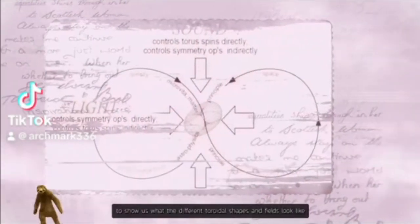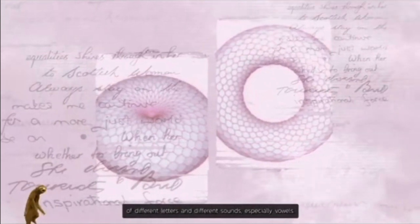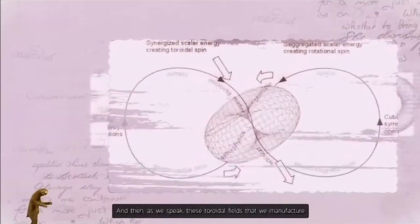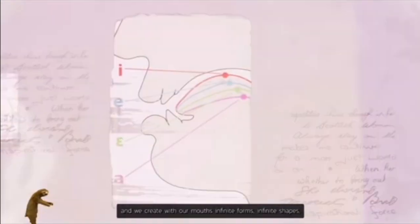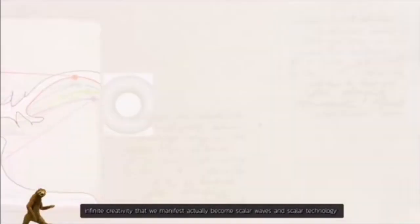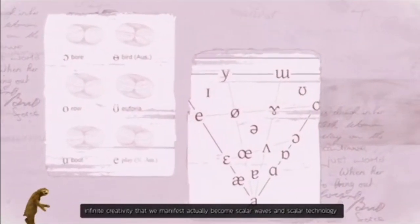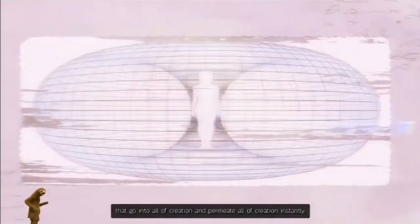Research has been done to show us what the different toroidal shapes and fields look like of different letters and different sounds, especially vowels. And then as we speak, these toroidal fields that we manufacture and create with our mouths, infinite forms, infinite shapes, infinite creativity that we can manifest, actually become scalar waves and scalar technology that go into all of creation and permeate all of creation instantly.